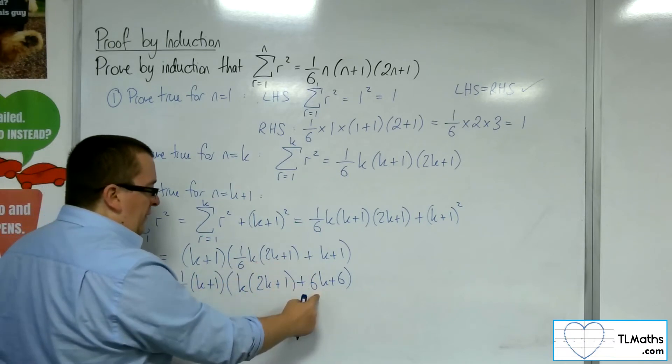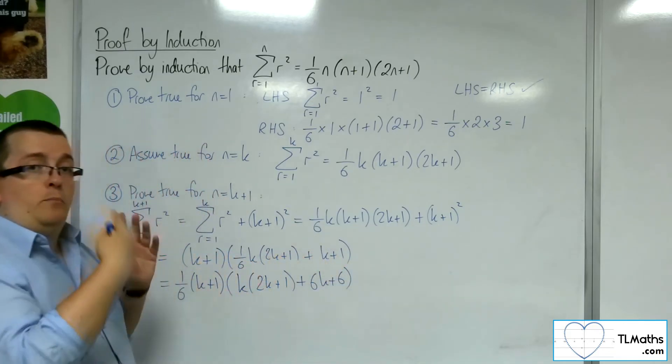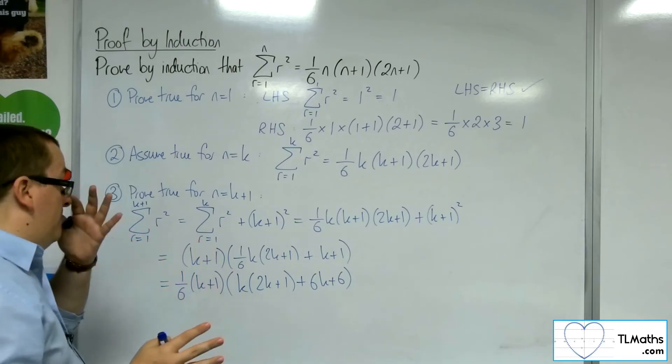1/6 times the 6k, gives me that term. 1/6 times that 6, gives me that term. So, I can put it back, and it will be exactly the same.